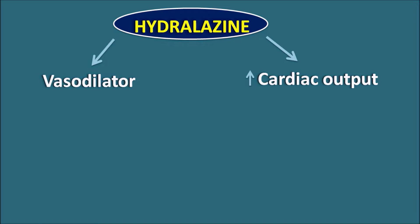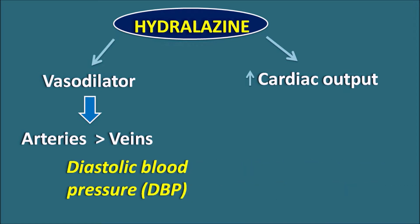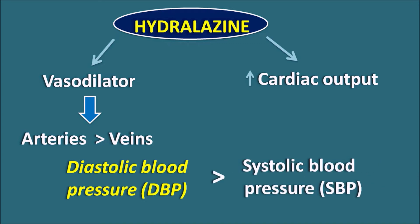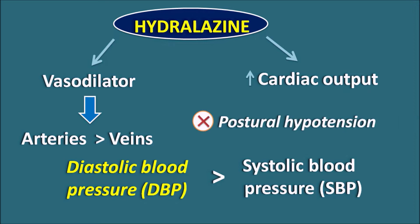An important point is that hydralazine mainly acts on the arteries compared with the veins. So this drug mainly produces arteriolar vasodilatation and its action on veins is very negligible. That's why this drug mainly reduces diastolic blood pressure compared with systolic blood pressure. Since systolic blood pressure is not that much affected, hydralazine does not produce postural hypotension.